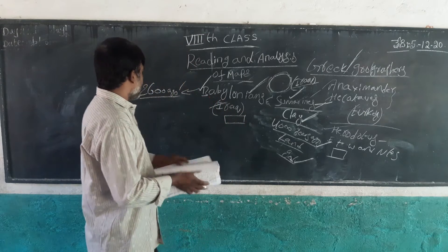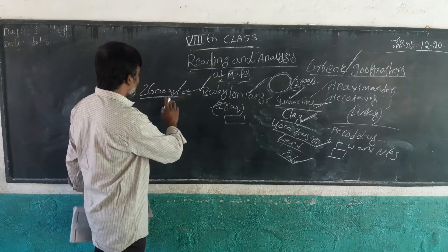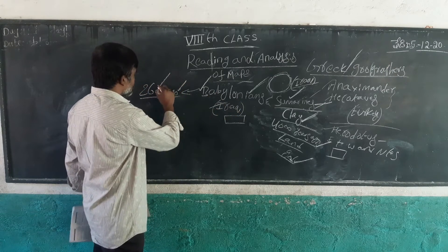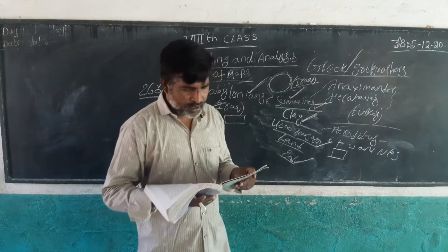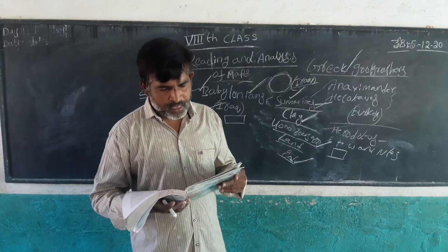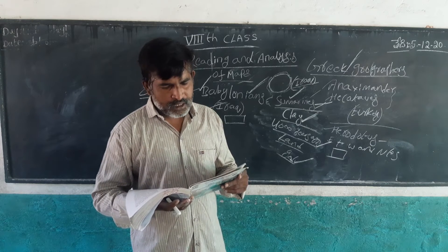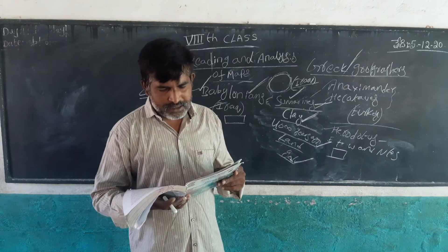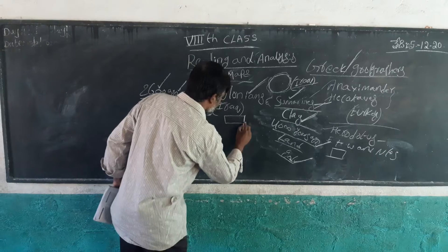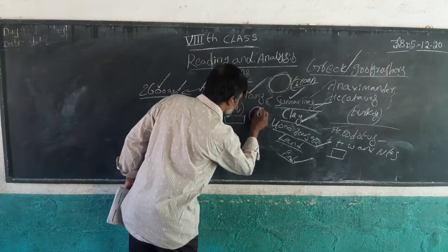The world map was created 2600 years ago — that is the world as they thought of it. One of the earliest maps drawn on a clay tablet dates to about 6000 years ago. They imagined the world as a round shape, with the Sumerians and Babylonians depicting the earth as round.